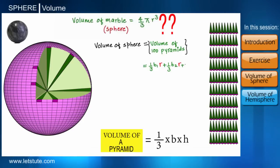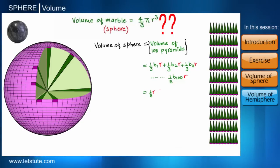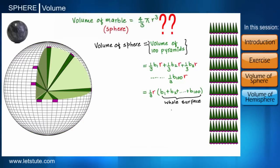We can write for the 100th pyramid 1/3 b₁₀₀r. Now 1/3 and r can be taken common, so the next step will be 1/3 into r into the bracket (b₁ + b₂ + ... + b₁₀₀). Since addition of all these tiny bases of the pyramids together form the whole surface of the sphere, so instead of this we can write the surface area of the sphere.